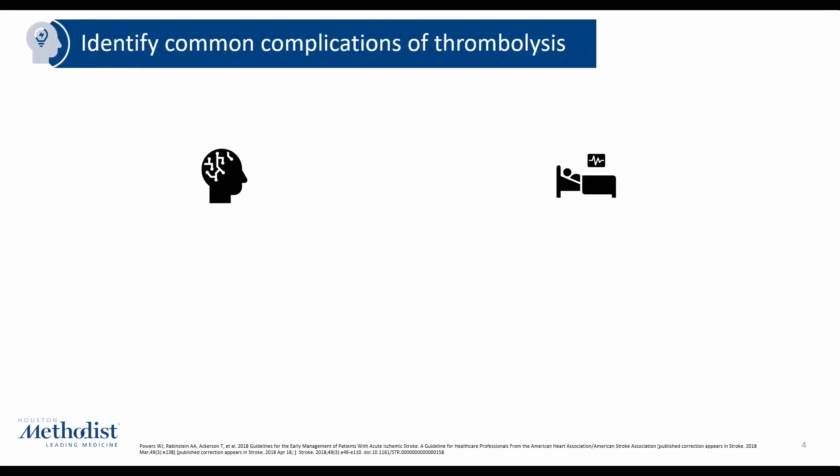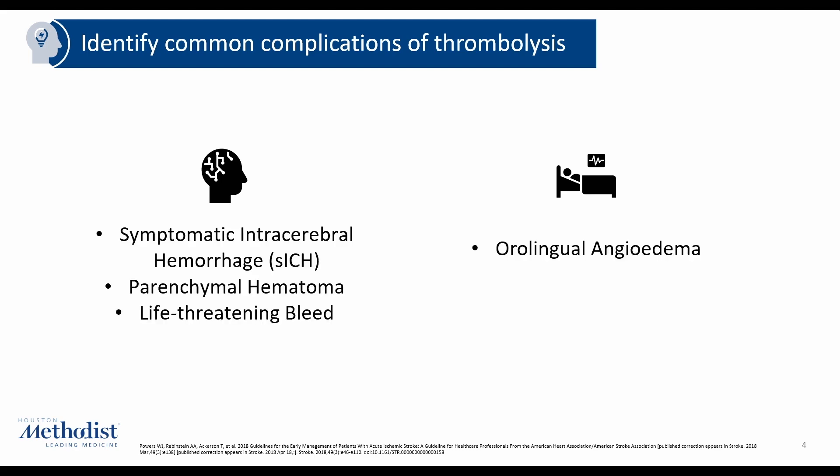In terms of common complications, there are really two buckets — the two most dangerous complications that require ICU intervention are hemorrhage and angioedema. For this presentation, we'll focus mostly on intracranial hemorrhage, though life-threatening extracranial bleeds exist as well. There is a classification breakdown: symptomatic intracranial hemorrhage and parenchymal hemorrhage. Radiographically, the most common classifications are HI1, HI2, and parenchymal hematomas. Symptomatic intracranial hemorrhage refers to any hemorrhage resulting in a neurological change.